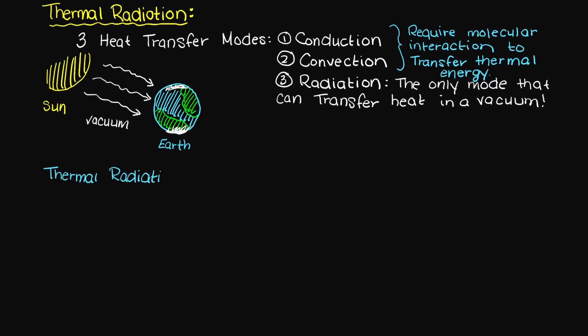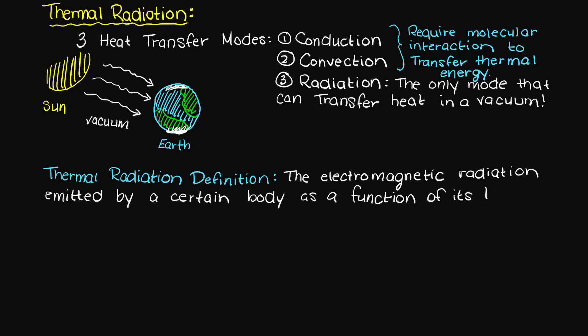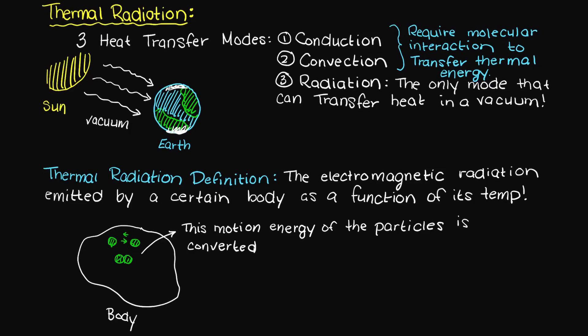So let's give thermal radiation a proper definition. Thermal radiation can be described as the electromagnetic radiation emitted by a certain body as a function of its temperature. So the particles in a given body are converting thermal energy, the particles banging around against each other, into electromagnetic energy.